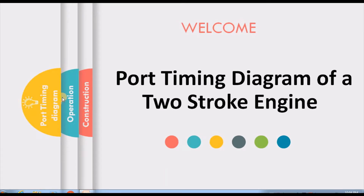We know that a two-stroke engine is one in which all the operations related to one complete cycle — suction, compression, expansion, exhaust — are completed in only two strokes of the piston. This is made possible by the simplified construction of the two-stroke engine when compared to a four-stroke engine, where four strokes are required for the completion of the cycle. Therefore it is important to understand the construction of a two-stroke engine before we discuss the port timing diagram.